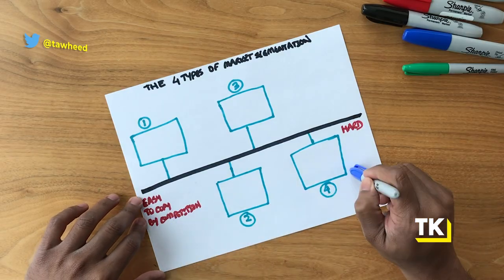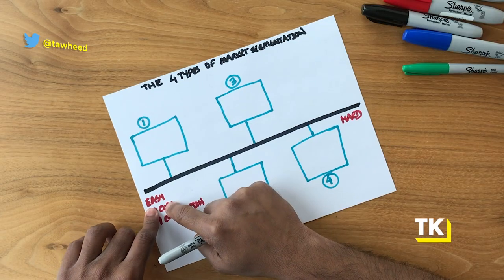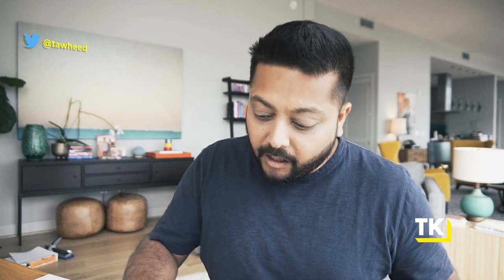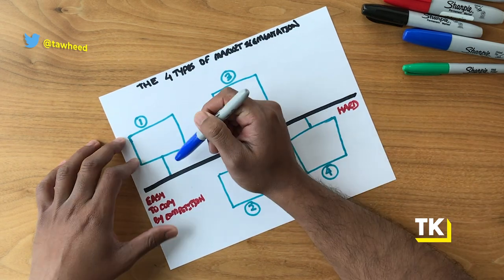When it comes to market segmentation, I'm going to walk you through four types, going from the easiest to the hardest. This is a double-edged sword: easiest means it's easy to implement, but it's also easy for your competitors to copy. Hardest means it's hard to implement and hard to identify, but once you do, it creates natural moats and gives you a competitive advantage that becomes harder and harder for competitors to copy.